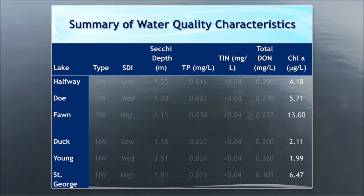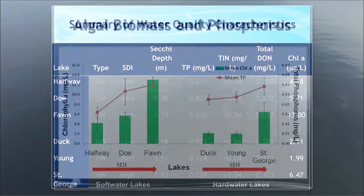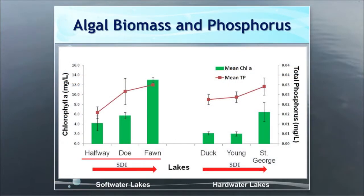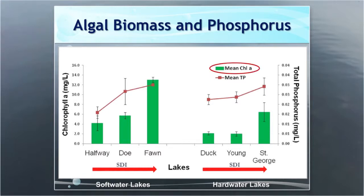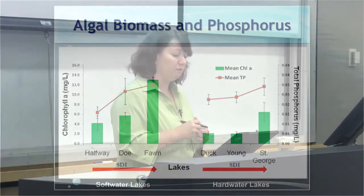When it comes to chlorophyll A, we did see some relationships with water quality variables. In the soft water and hard water lakes going along the direction of shoreline development, as chlorophyll increases — represented by the green bars — there is a general pattern of increasing phosphorus. This makes sense because algae are typically limited by phosphorus availability. However, even though this trend is evident, it wasn't statistically significant when looking at the direct relationship between phosphorus and chlorophyll.